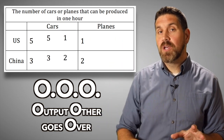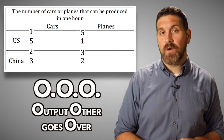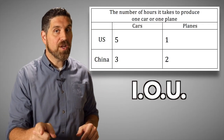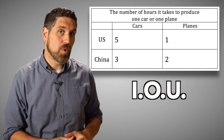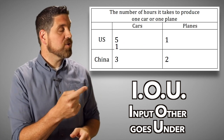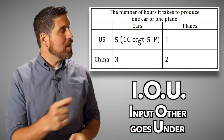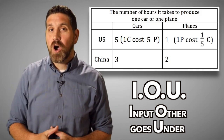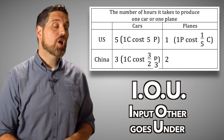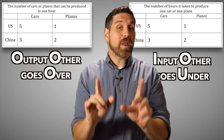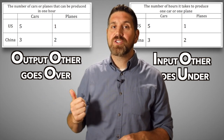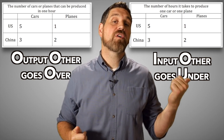For input questions, it's not the same. For input questions, use IOU — input, other goes under. For the US, the opportunity cost of producing each car is five planes, and each plane costs one fifth of a car. For China, each car costs three halves of a plane and each plane costs two thirds of a car. So when calculating the per unit opportunity cost, remember OOO for output questions and IOU for input questions.